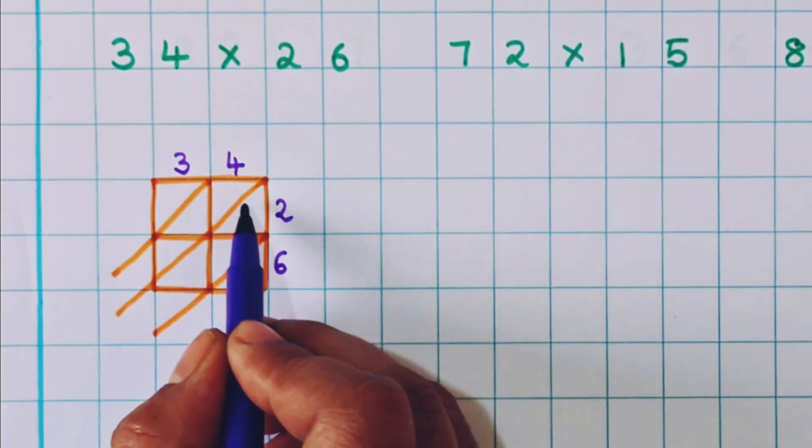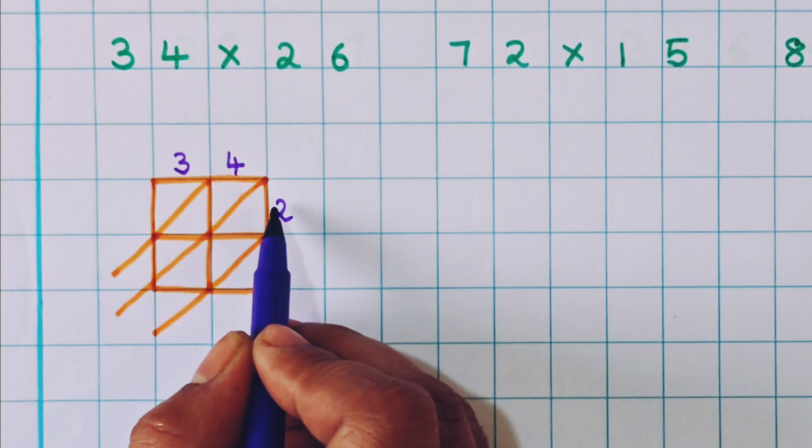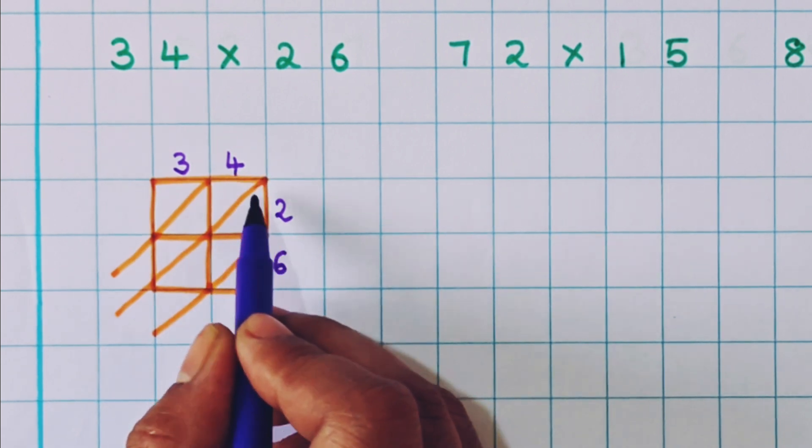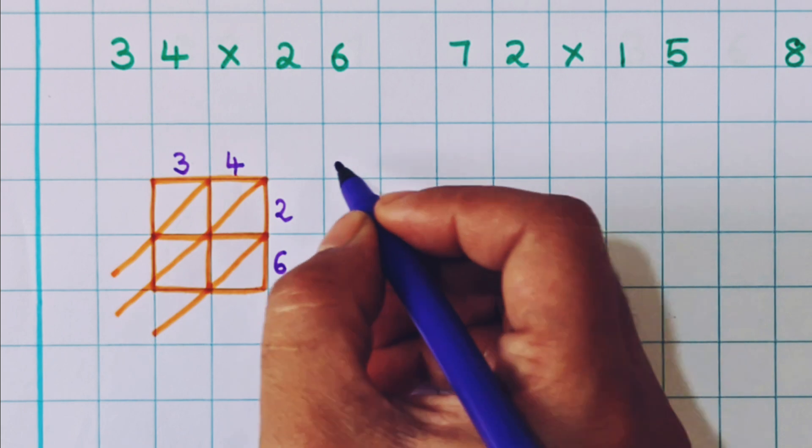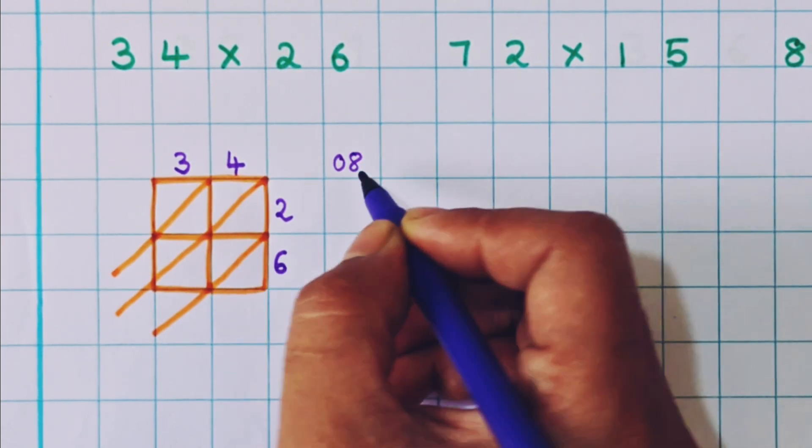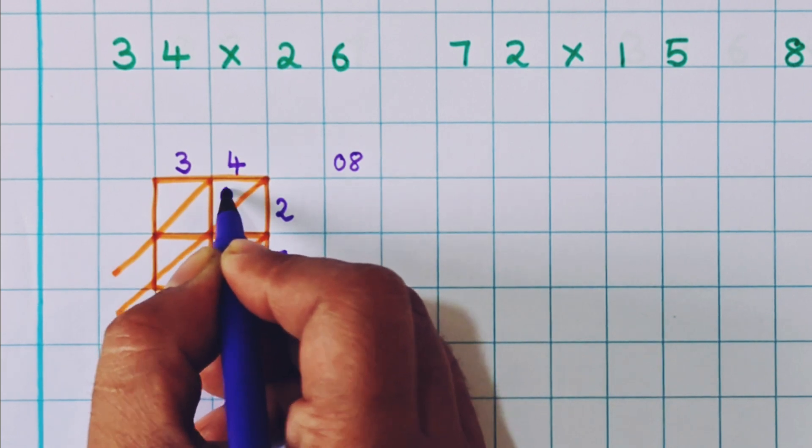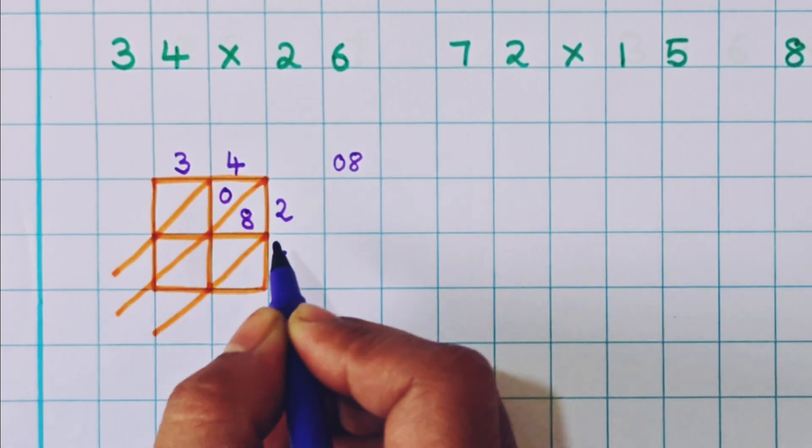Now we are going to start the multiplication from the ones place. So we will start from here. Four twos are eight. So eight actually how we will write? We will write like this. So 0 we will write here and 8 we will write here.